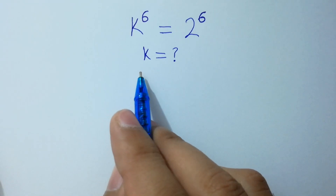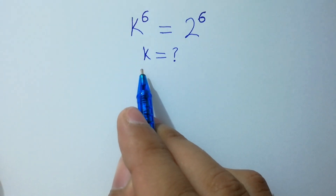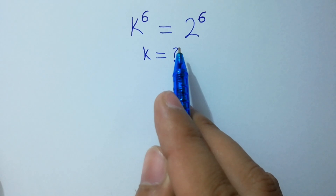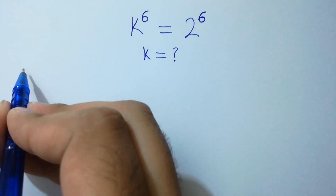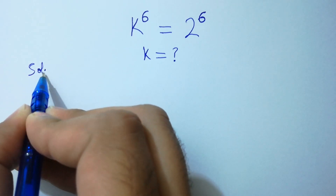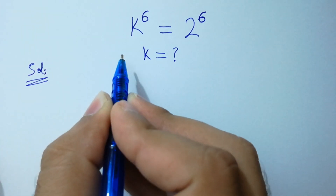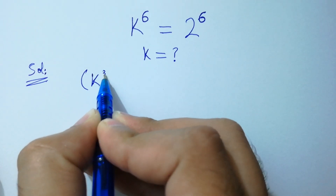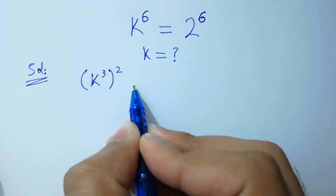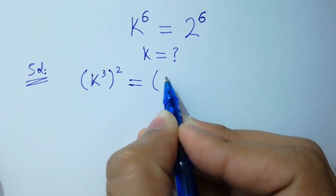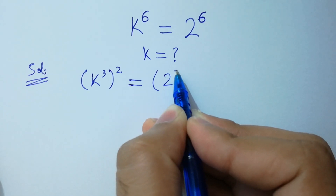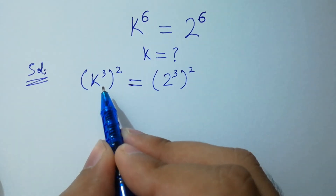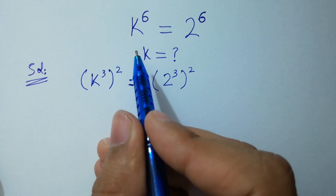Hello friends. Find the value of k if k to the power 6 equals 2 to the power 6. Let's solve it. This will be equal to k to the power 3, to the whole power 2, equal to 2 to the power 3, to the whole power 2, because 3 times 2 equals 6.